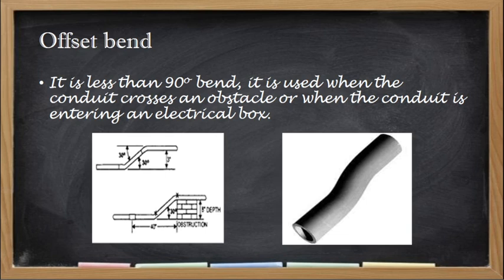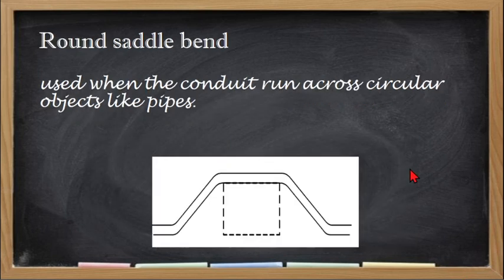Next we have the round saddle bend, which we could also call a rectangular saddle bend. There are two types of saddle bends. The use of this conduit bend is to run across circular objects like pipes. If it's rectangular objects, we will have the rectangular saddle bend.